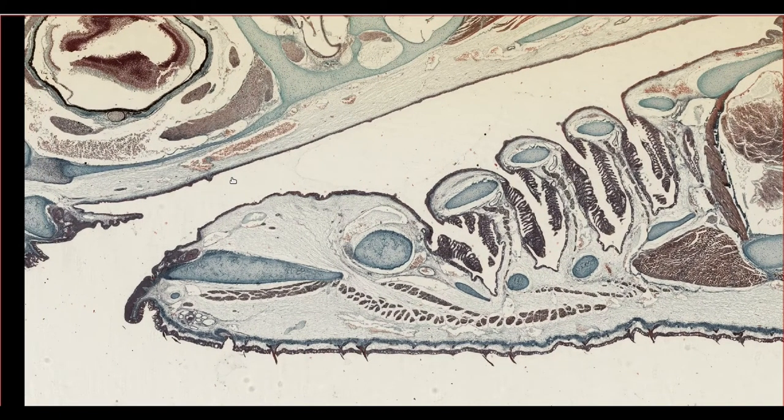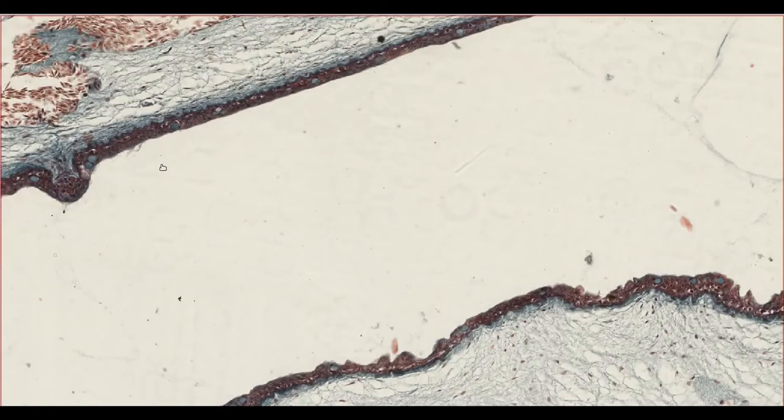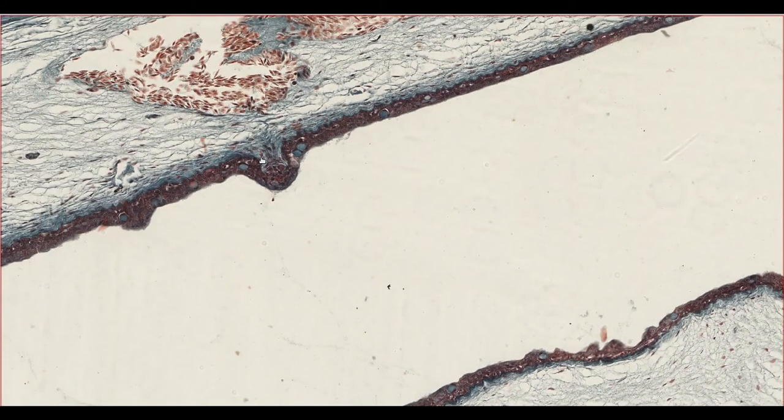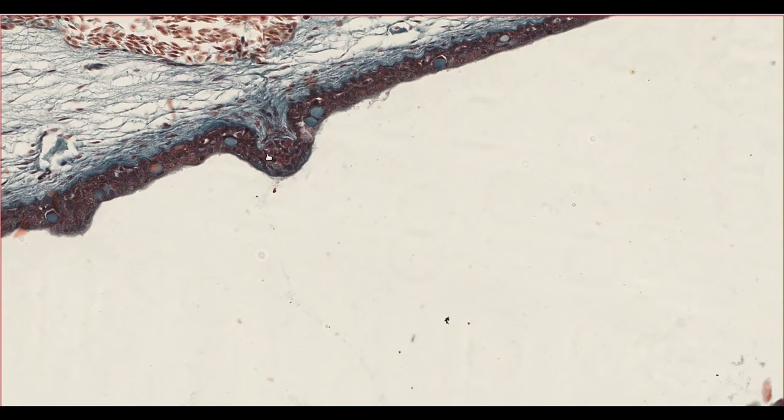Taste is not a well-developed sense in sharks, but they do have receptors throughout the mouth which sense fat content. This allows the shark to decide whether something is worth the bother of eating, but only once they've taken a bite from it.